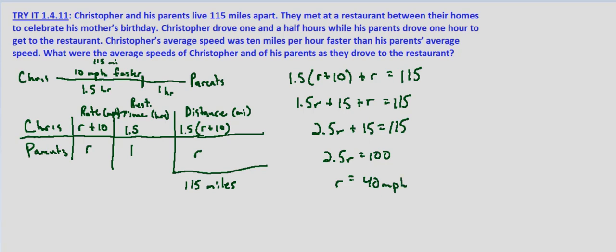And that's the speed, the rate of the parents. Chris's rate we know is R plus 10, which equals 40 plus 10, which equals 50 - 50 miles per hour. So Chris drove 50 miles per hour on average and his parents drove 40 miles per hour on average.